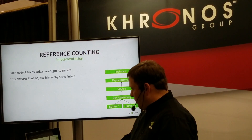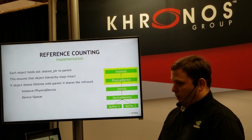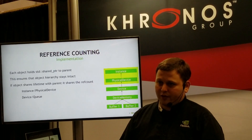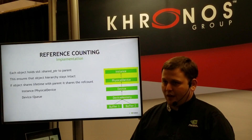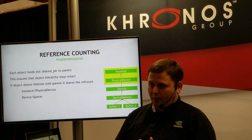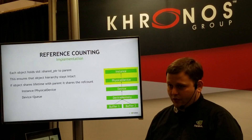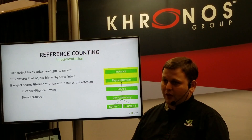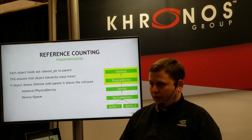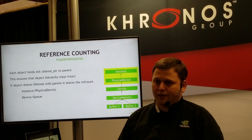There are a few special objects where the lifetime is equal. For example, instance and physical device have the same lifetime, and the device and the queue also have the same lifetime. In those cases, we are just sharing the reference count of the shared pointer. This way, we ensure that we don't have any cycles in the hierarchy.